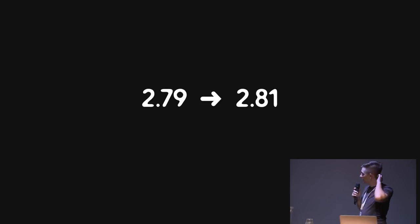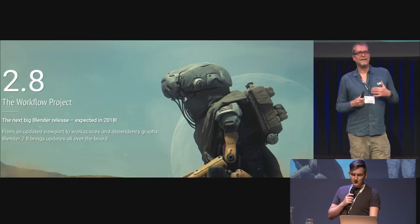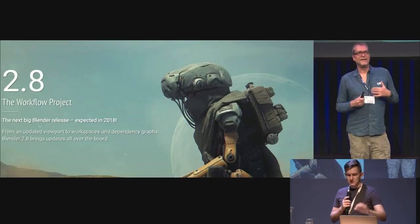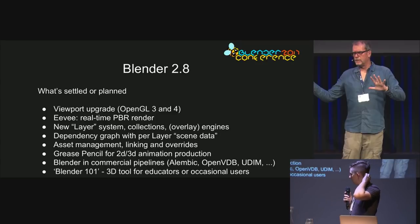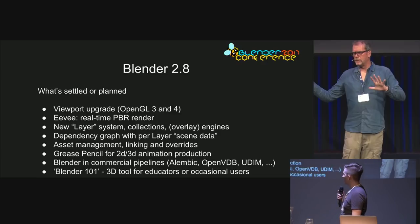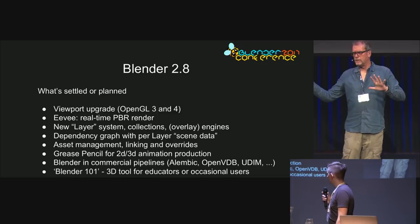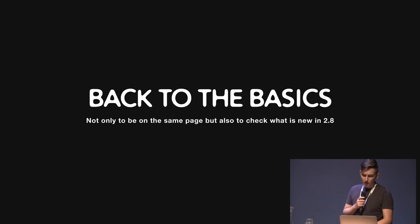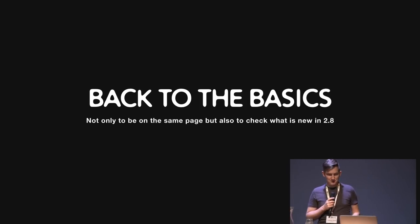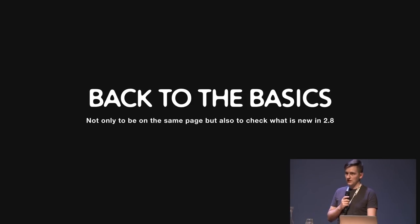The last talk I recorded was in September 2017. Back then there was a big keynote, the workflow project, and Tom was super excited. But there were mainly lots of tiny projects shaping up to something bigger. Things that were super new back then and not even fully conceived — just as ideas — like the viewport upgrade, EEVEE in general as a real-time PBR renderer, asset management, linking and overwrites. Grease Pencil was still a rough version and not as fine and done as now. So let's go back to the basics — not only to be on the same page, but also to check what's new in 2.8. It's not too much, because the last real commit to Metaballs with a change was 2015 or so.